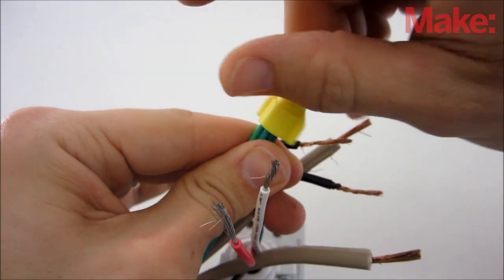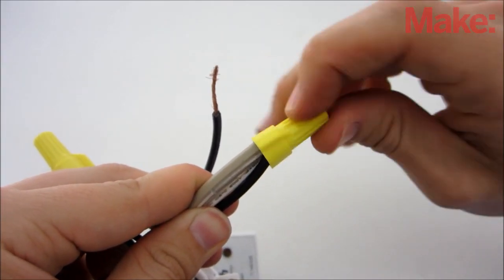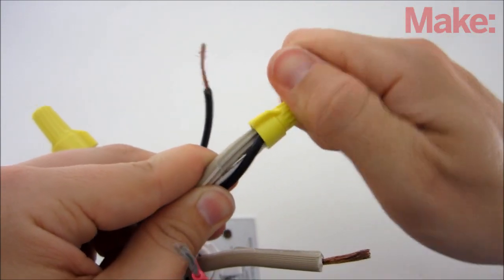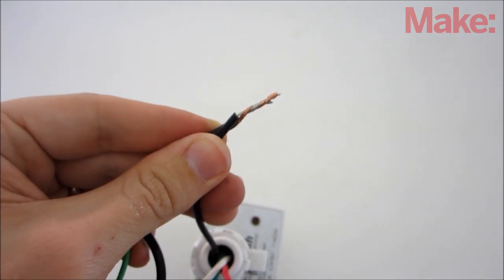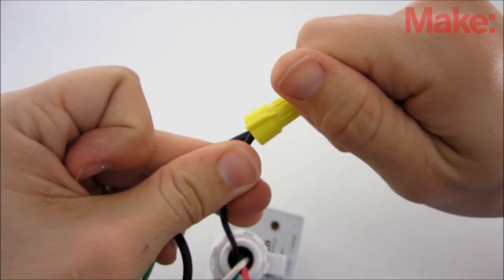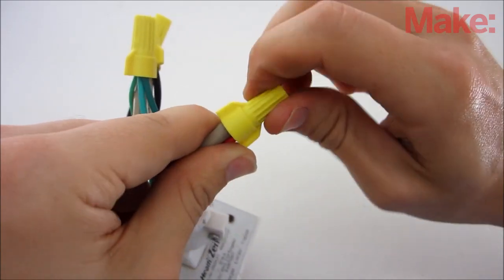First, connect all the green wires together. Next, connect one wire from the male power cord and one wire from the female power cord to the white wire on the motion sensor. Then connect the third wire from the male power cord to the black wire on the motion sensor. Lastly, connect the third wire from the female power cord to the red wire on the motion sensor.